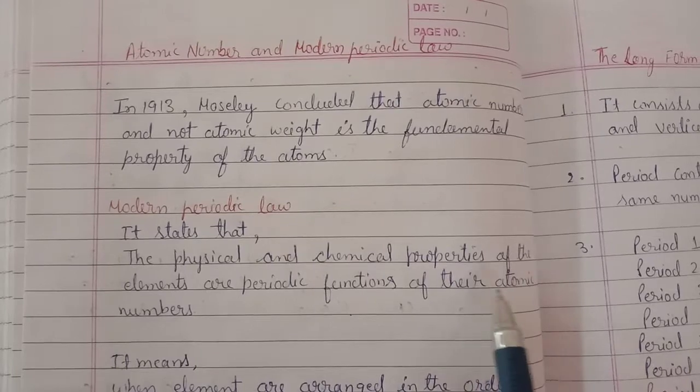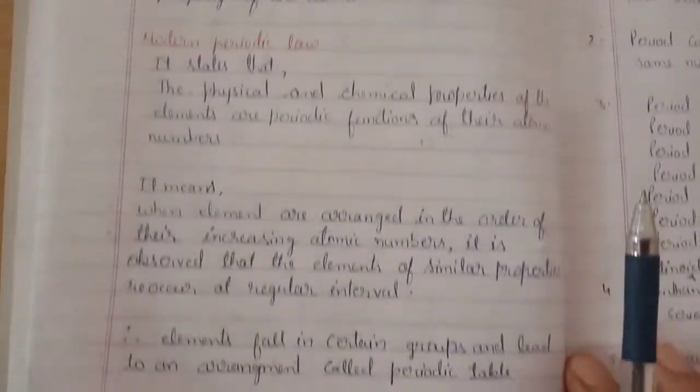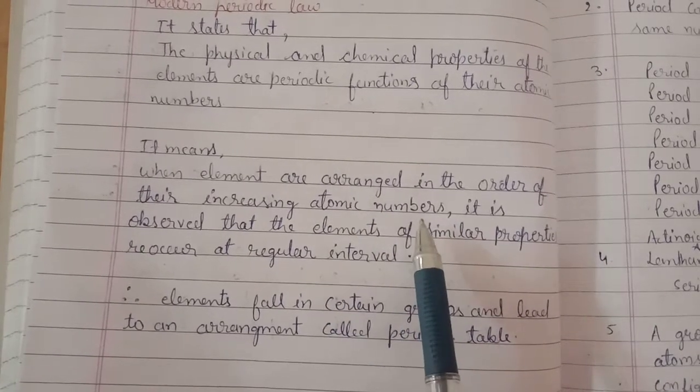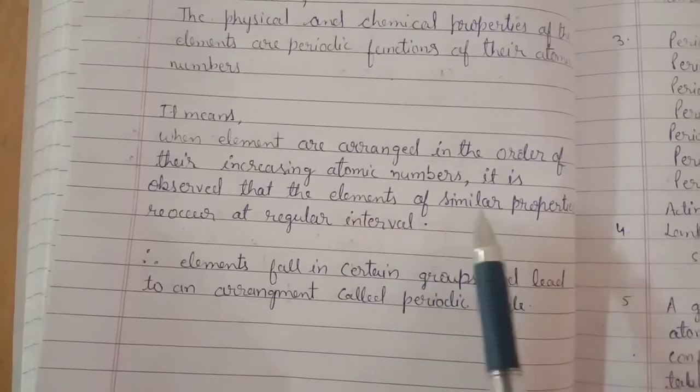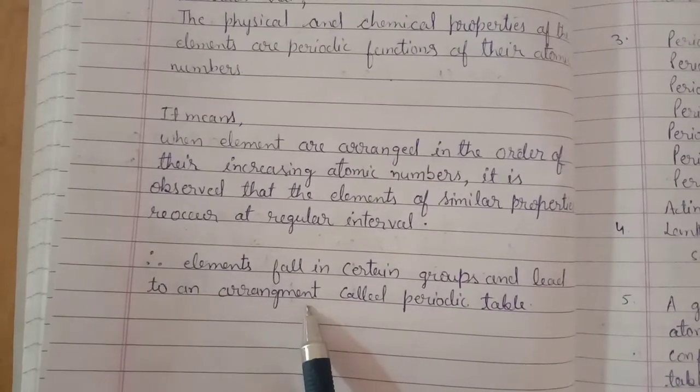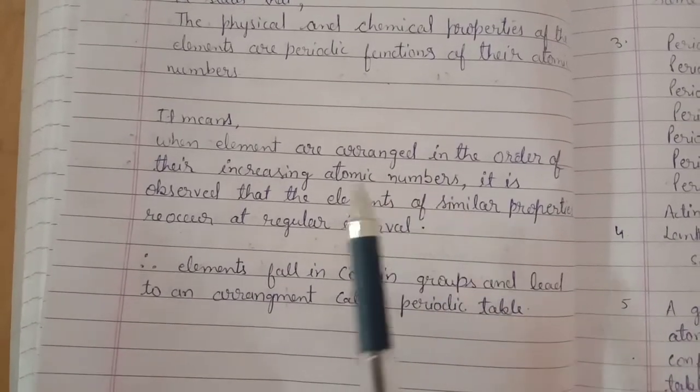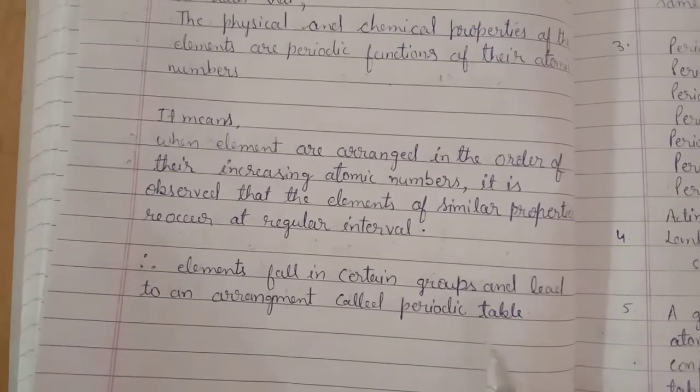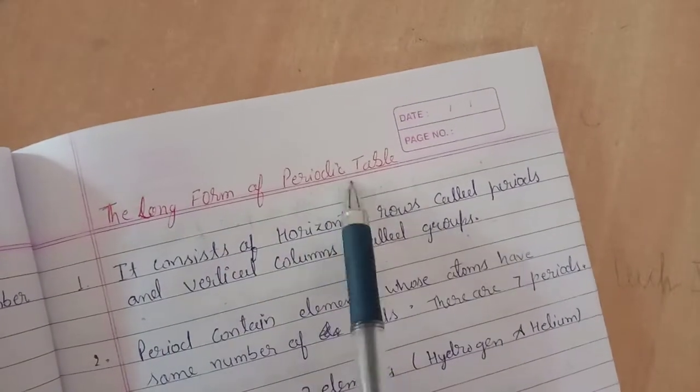Everything is the same as in Mendeleev's periodic law except the last two words. Instead of atomic mass, atomic number is given here. Any element's physical or chemical property depends on atomic number, and they are periodic functions, meaning after some gap, the same properties repeat. It means when elements are arranged in order of their increasing atomic number, it is observed that elements of similar properties recur at regular intervals. Therefore, elements fall into certain groups and periods, and this arrangement is called the periodic table. This is the long form of the periodic table.